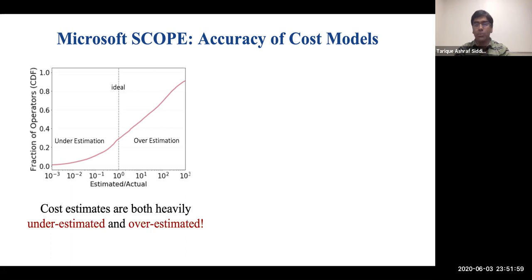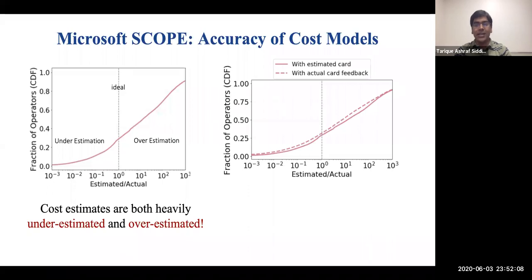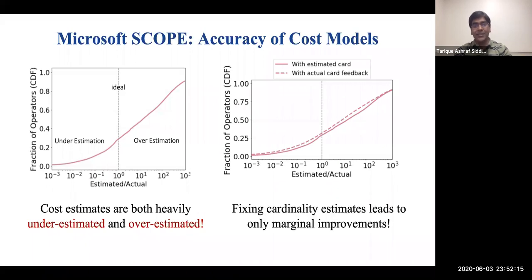Further, it is a common belief that cost models are less important and that correcting cardinalities automatically leads to higher cost model accuracy. To verify this in Scope, we feed back the actual runtime cardinalities, as depicted by the dotted lines in the second figure. As we can see, even after fixing cardinalities, there is still a wide gap between the estimated and the actual cost, showing how difficult it is to model the runtime behavior of physical operators in big data systems.